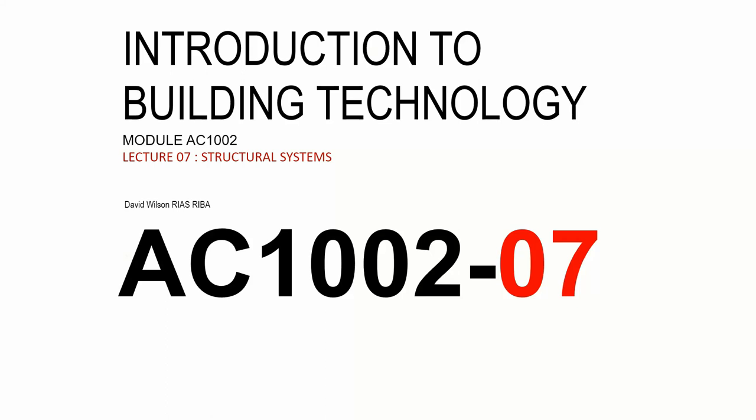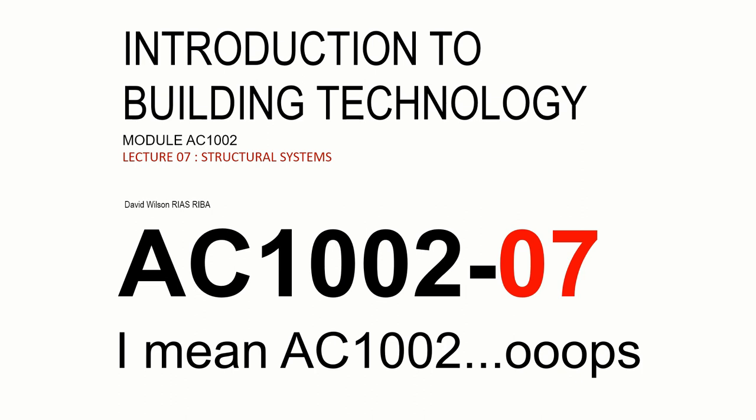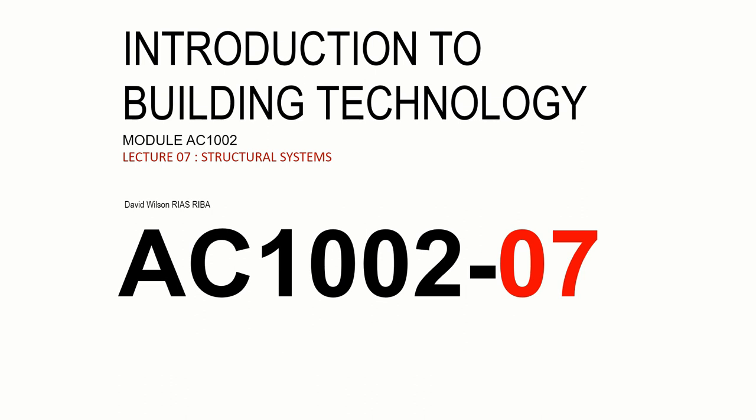Hello and welcome to the seventh lecture for AC 1007. This lecture builds on the previous lecture on structural components and introduces the ideas of structure as systems, talks a little bit about how we might put a building together and understand how it works structurally.